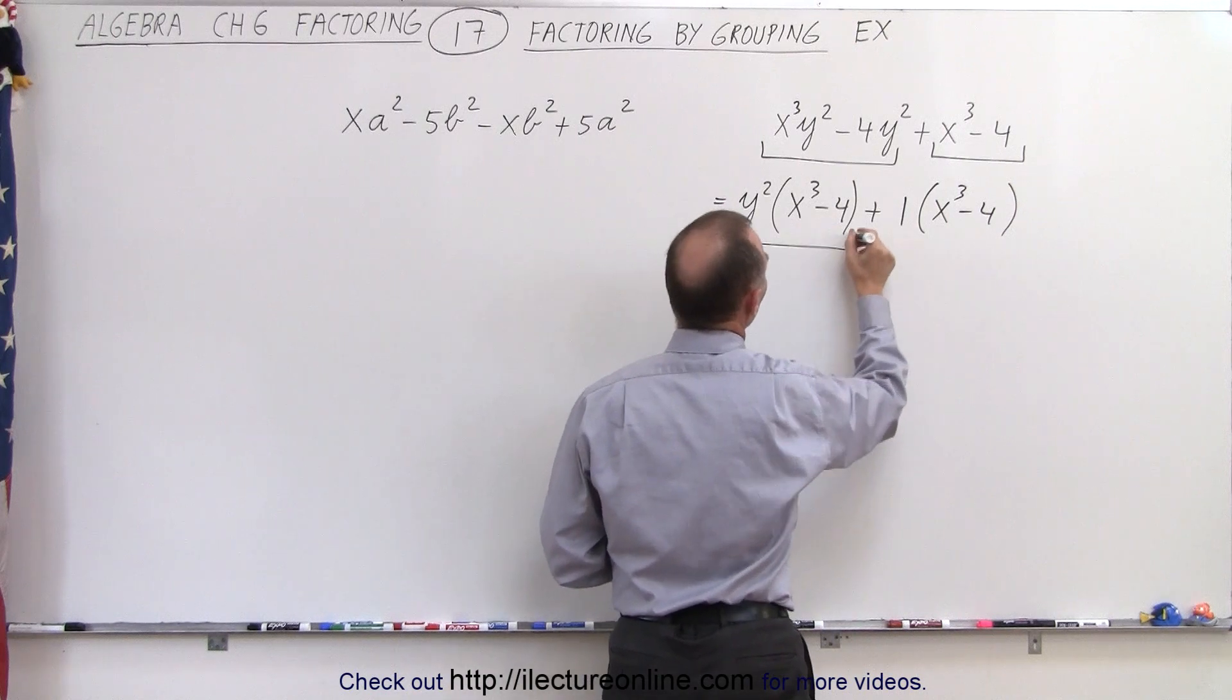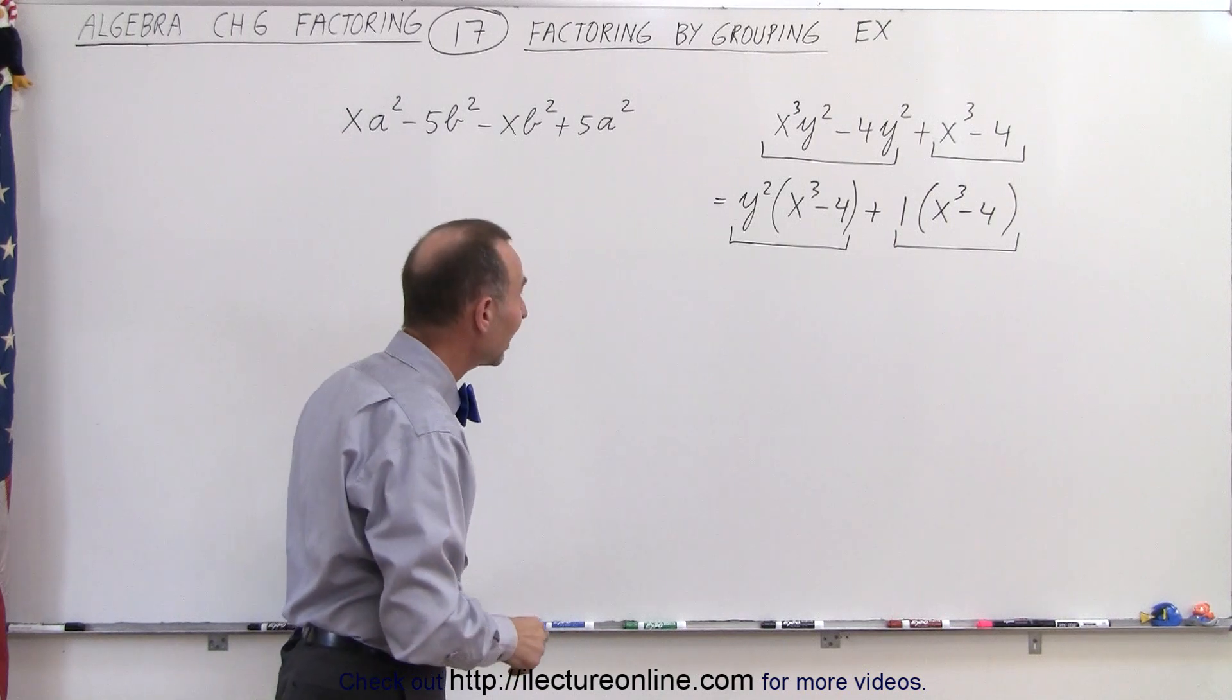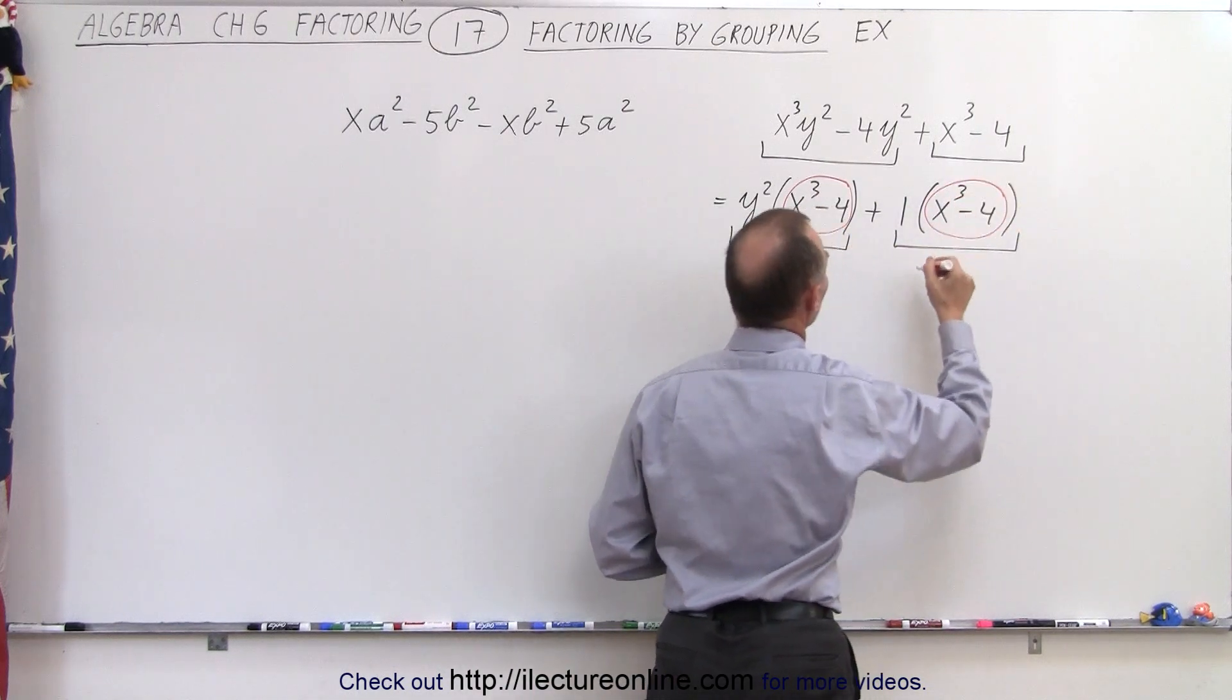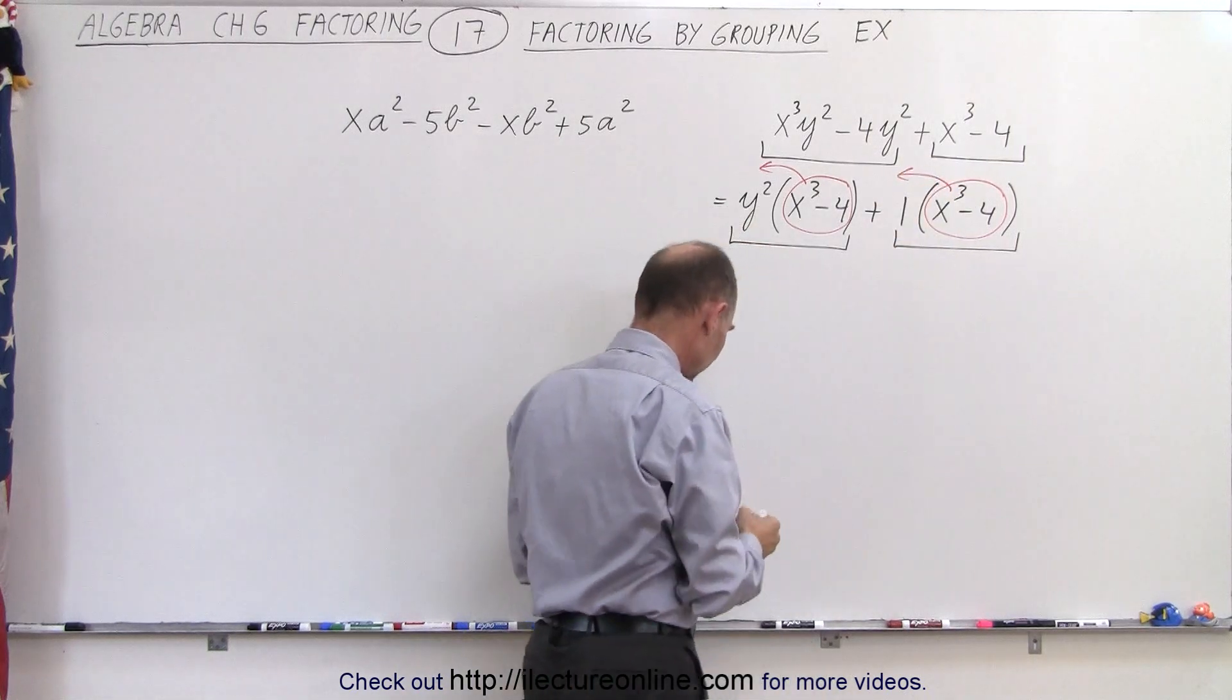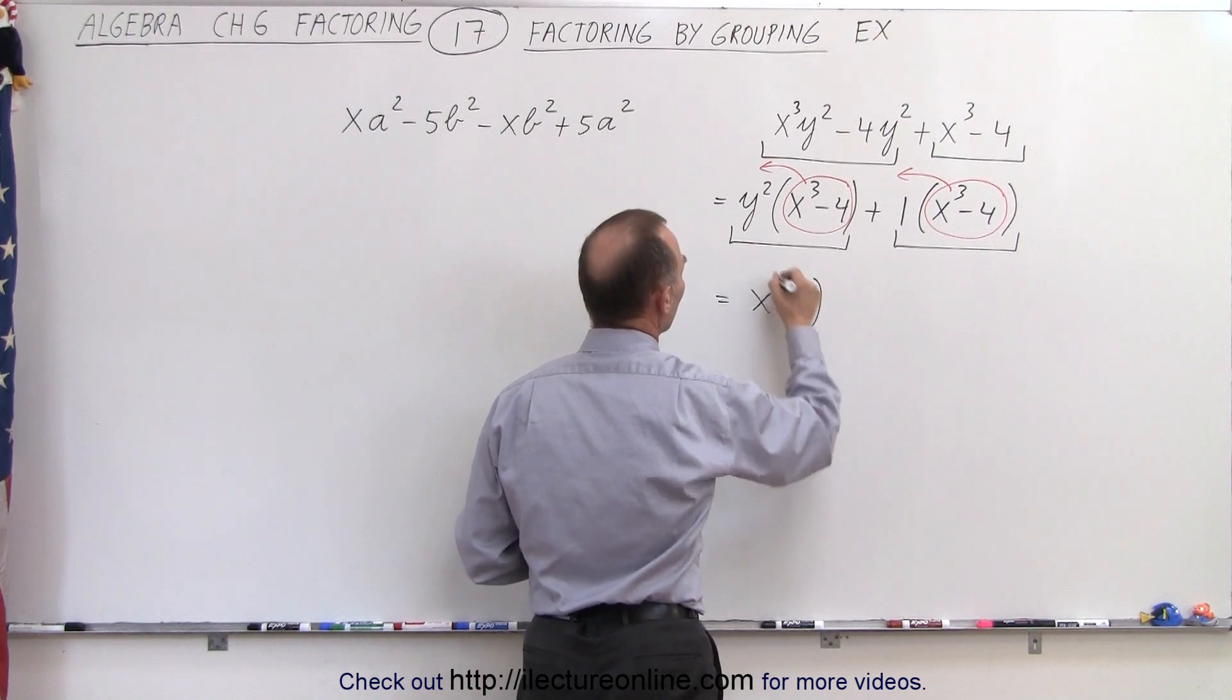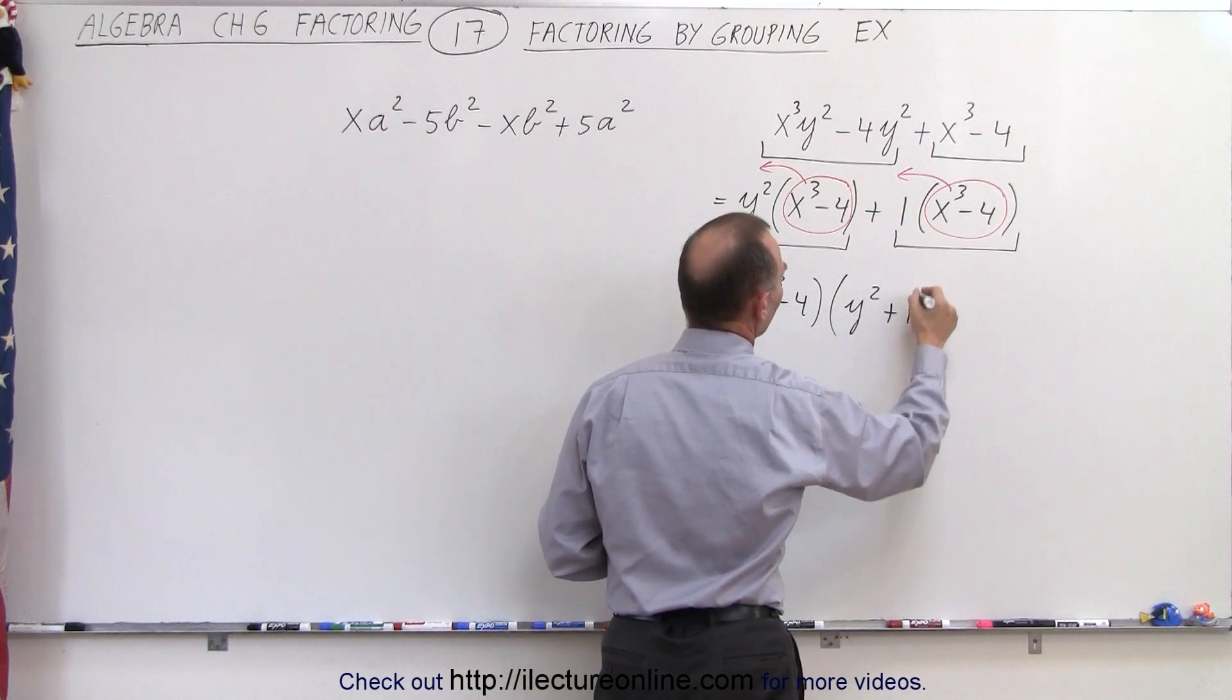When we do that, we now have reduced this to the sum of two terms, and notice each of those two terms contains in it an x-cubed minus four. So there's an x-cubed minus four here and here, which means we can factor those two out. This will be equal to x-cubed minus four, multiplied times what's left. On the first term we have a y-square left and on the second term we have a plus one left.